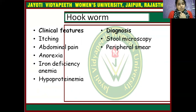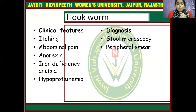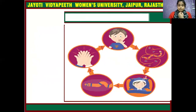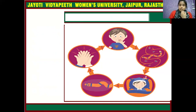Hookworm's clinical features are itching, abdominal pain, anorexia, iron deficiency anemia, and hypoproteinemia. Diagnosis is made by stool microscopy and peripheral smear. If children eat anything contaminated, worms can enter the stomach and circulate throughout the whole body at night. If sanitization and hygiene are not maintained, worm infestation can spread to others.